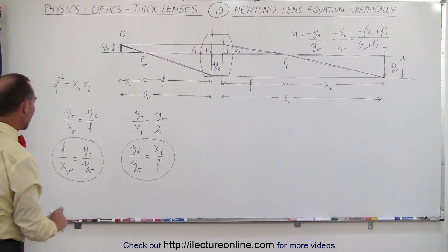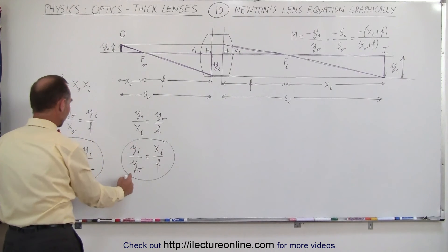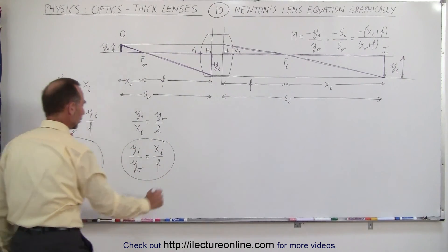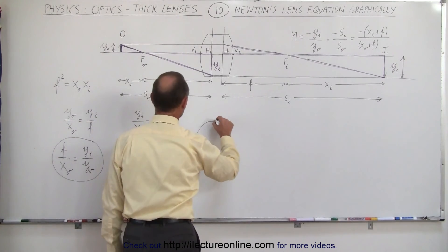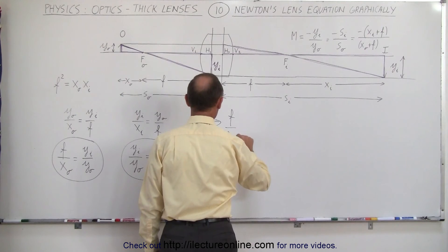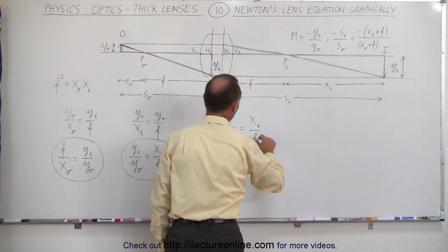If this is true, that means this is equal to that, and this is equal to this, and since those two are equal to each other, we can set those two equal to each other. So from those two, we can then say that f divided by x sub O must therefore be equal to x sub i divided by f.